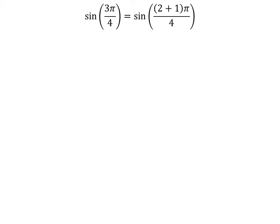Here is the explanation of the first method. We know 3 is equal to 2 plus 1, so sine of 3 times pi upon 4 is equal to sine of 2 plus 1 times pi upon 4.